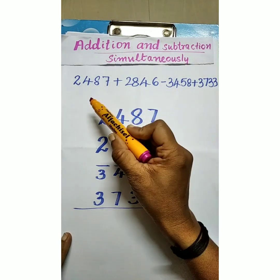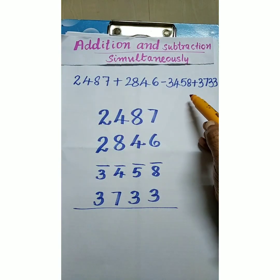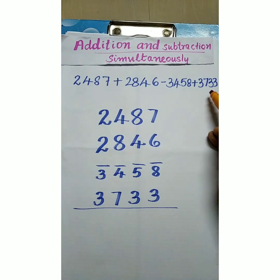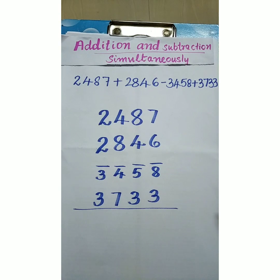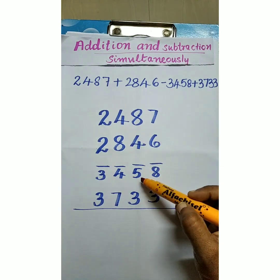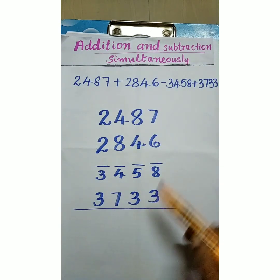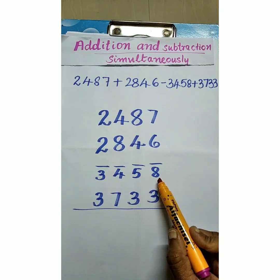Now the question is 2487 plus 2846 minus 3458 plus 3733. One negative number and three positive numbers. I written like this in order: first number, second number, third number, and fourth number. Minus number is written like this bar 3 bar 4 bar 5 bar 8.